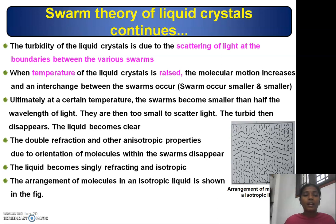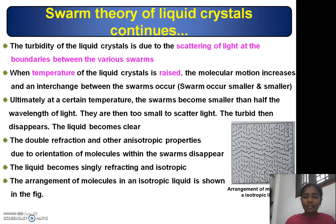When the temperature of the liquid crystal is raised, molecular motion increases and interchange between swarms occurs. The swarms become smaller and smaller, and ultimately at a certain temperature, a swarm becomes smaller than half the wavelength of light. They are then too small to scatter light, the turbidity disappears, and the liquid becomes very clear. Double refraction and other anisotropic properties due to orientation of molecules within the swarms also disappear, and the liquid becomes singly refracting and isotropic.